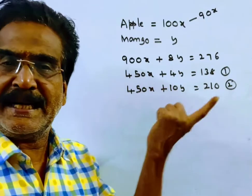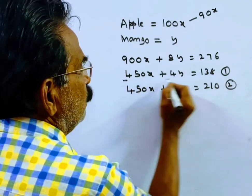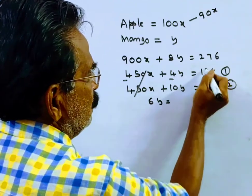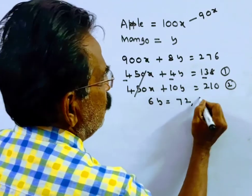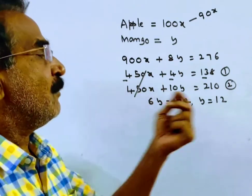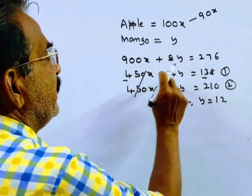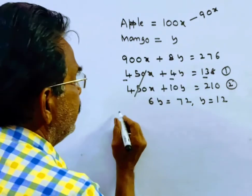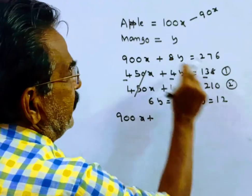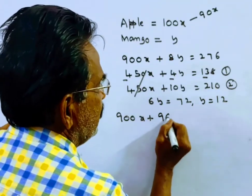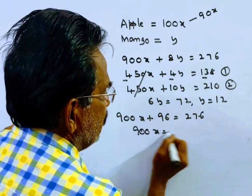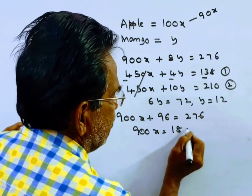Now let us do equation 2 minus equation 1. We get 10y minus 4y, which is 6y equals Rs. 72, so y equals Rs. 12. This is the price of each mango. Now let's substitute Rs. 12 in equation 1. 900x plus Rs. 96 equals Rs. 276. So 900x equals Rs. 180.